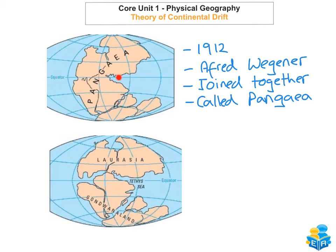About 200 million years ago, Pangea started to split away and they formed two landmasses called Laurasia and Gondwanaland. Laurasia is made up of Europe, North America and most of Asia. Gondwanaland is made up of Africa, India, South America and Australia. Over time these two landmasses began to split even further and they split into the continents as we know them today.